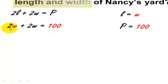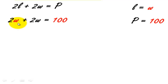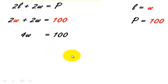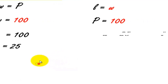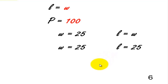we'll have 2W plus 2W equals 100. You can also replace W by L and get the same answer. 2W plus 2W is equal to 4W equals 100. Divide by 4 on both sides, we'll get W equals 25. Since L is equal to W, then L is also equal to 25.